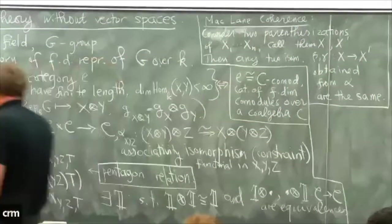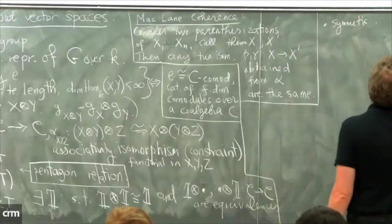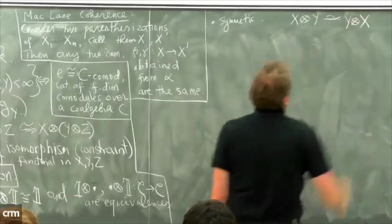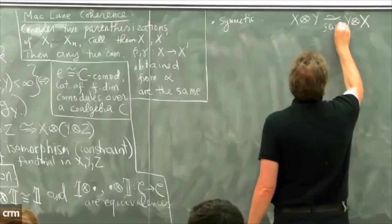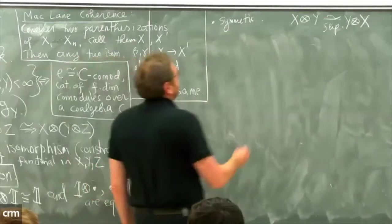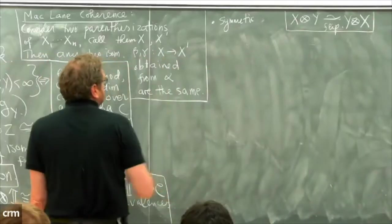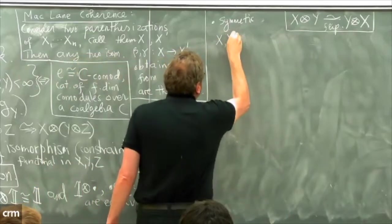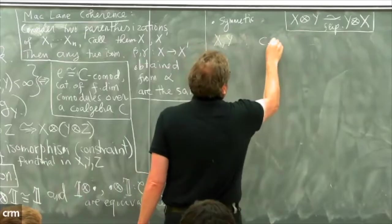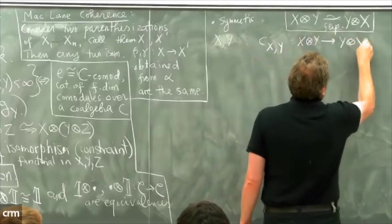Another structure on this category is that it is symmetric. If you tensor two representations there is an obvious isomorphism with the tensor product in the opposite order — just the flip map — and if you do it twice you get back the identity. To abstract this, a symmetric category has, for every two objects x and y, a permutation map c_{x,y}: x ⊗ y → y ⊗ x, which is functorial in x and y.